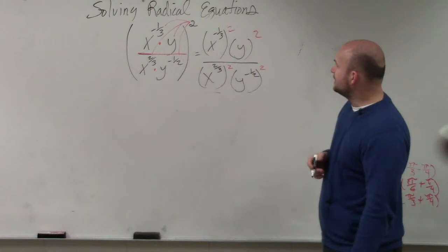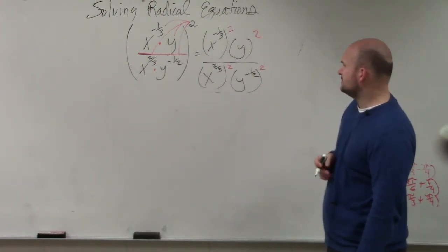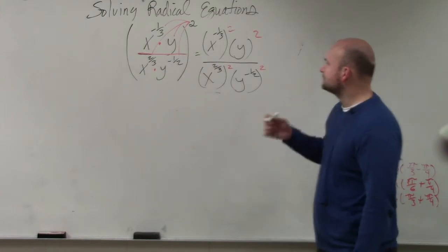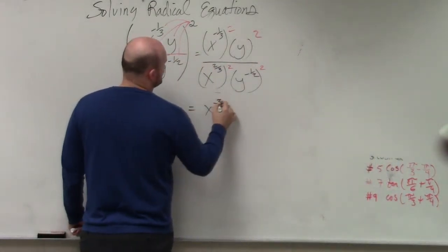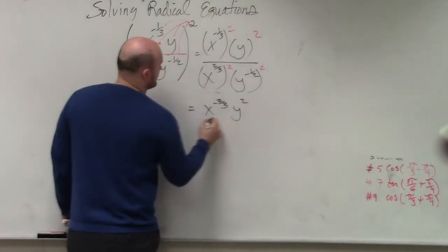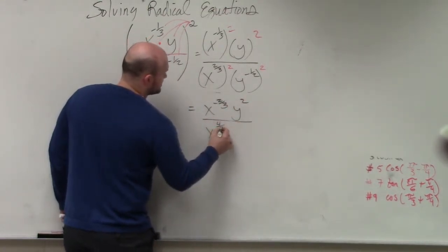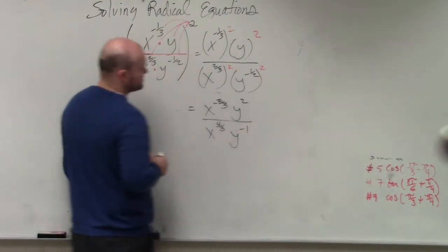Oh wait, that becomes 4. Okay, so let's go ahead and distribute here. So I have x to the negative 2 thirds y squared all over x to the 4 thirds times y to the negative 1st.